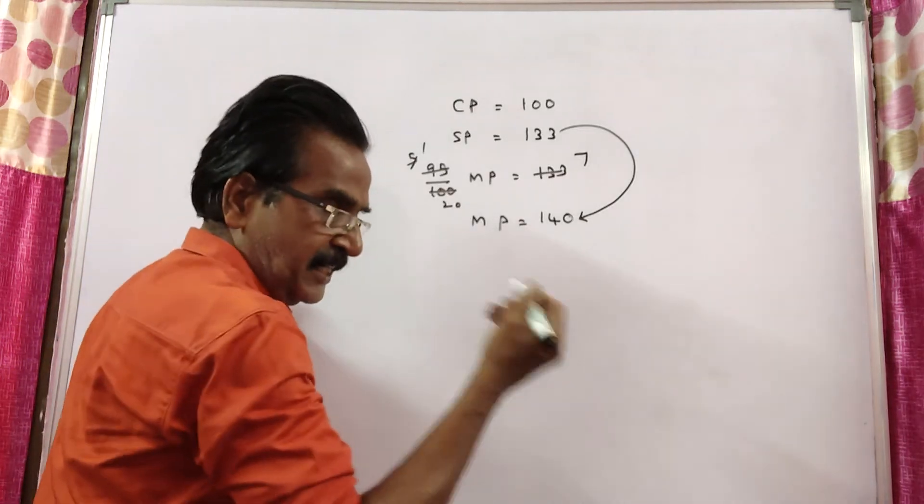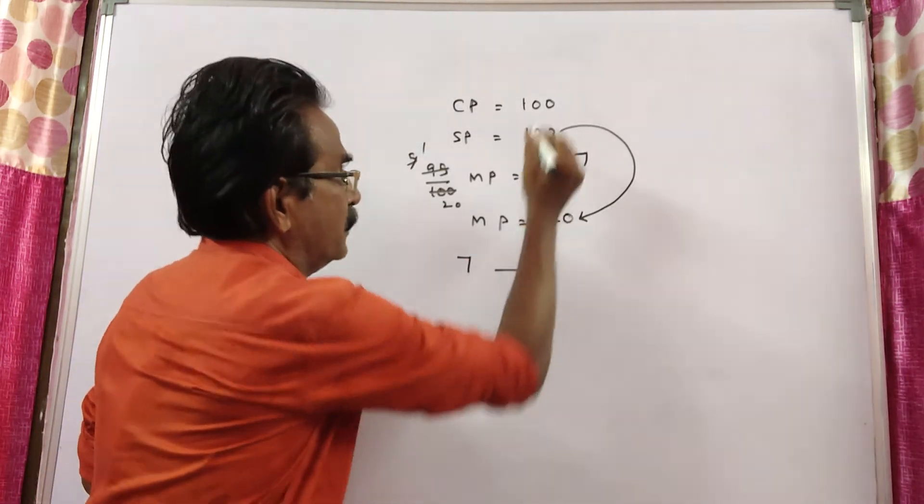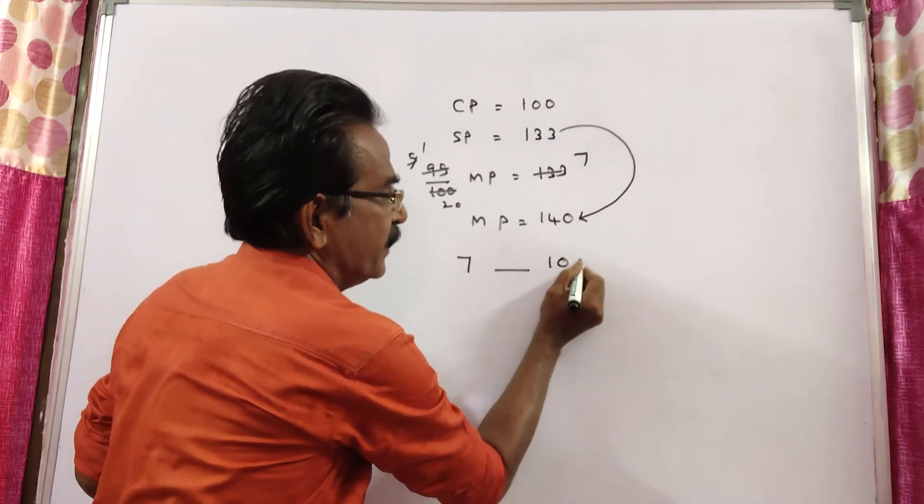So if the additional profit is rupees 7, then cost price is 100. In the problem,